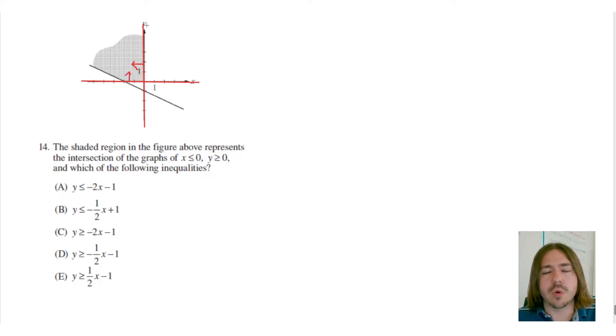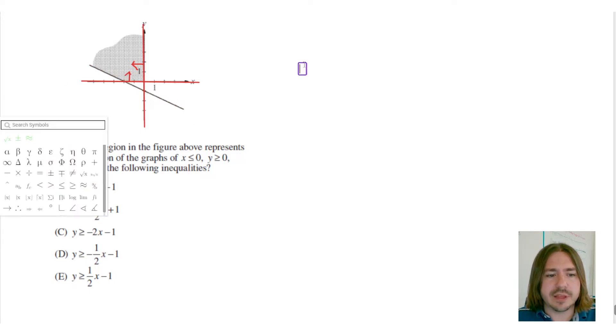And then the last equation, or inequality rather, is what we're trying to figure out, which is basically this line right here. Now you can see that the shading is above this diagonal line.